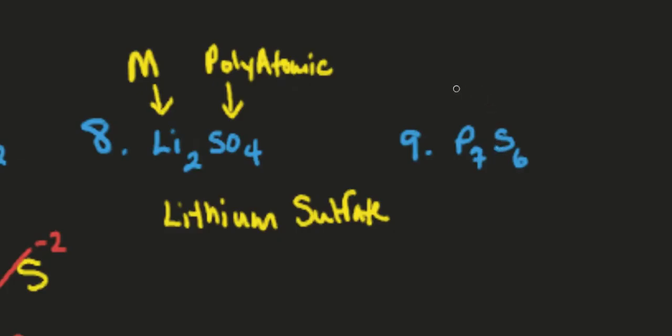So here we've got two nonmetals. So it's a covalent molecular. It's a covalent bond and molecular compound. Not ionic. So therefore we use the prefixes. So this would be hepta-phosphorus.